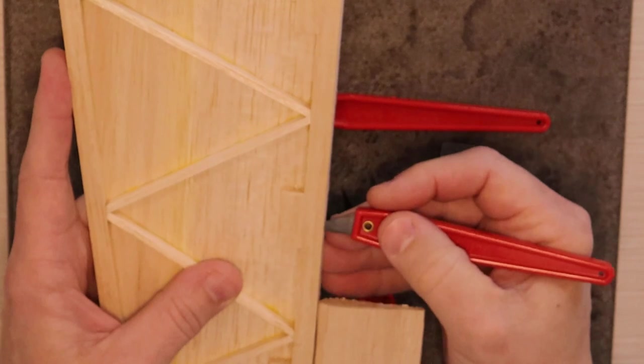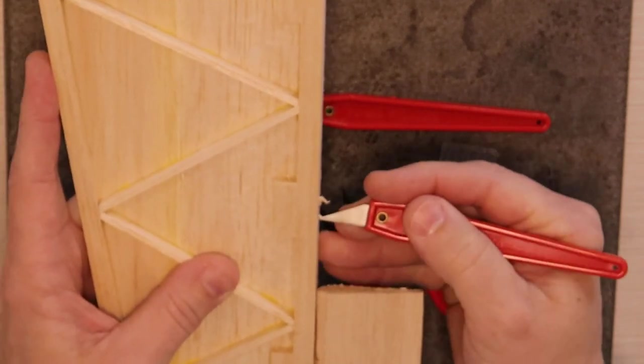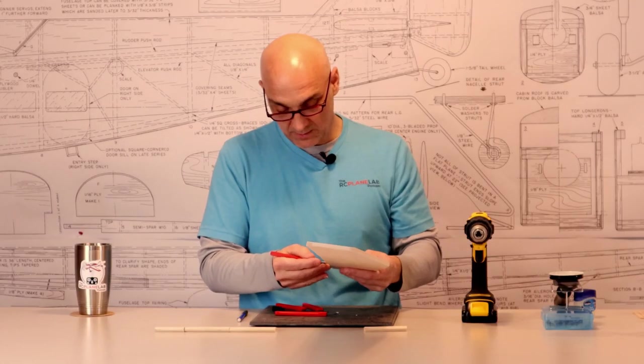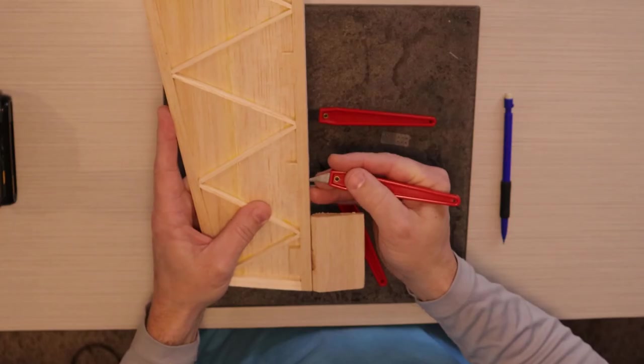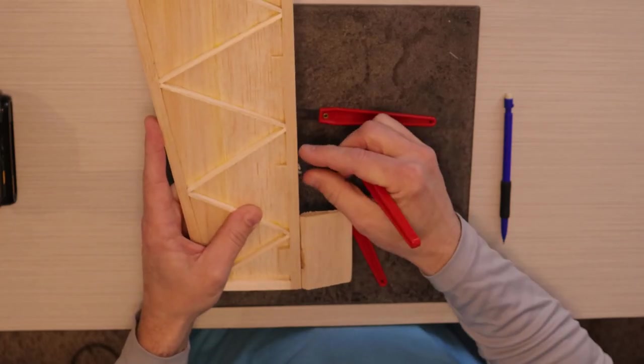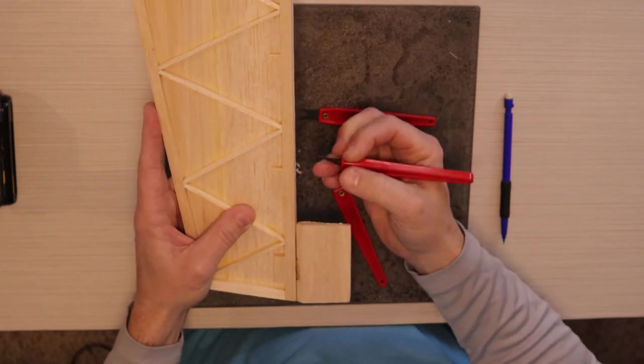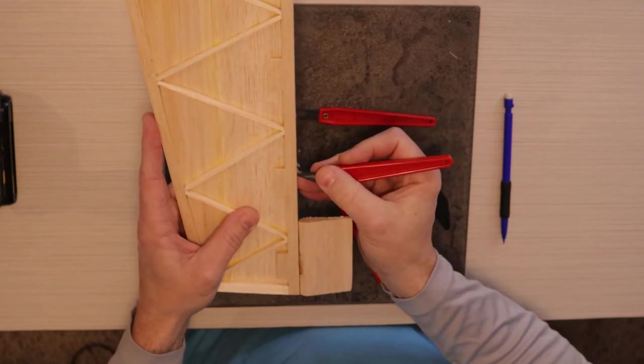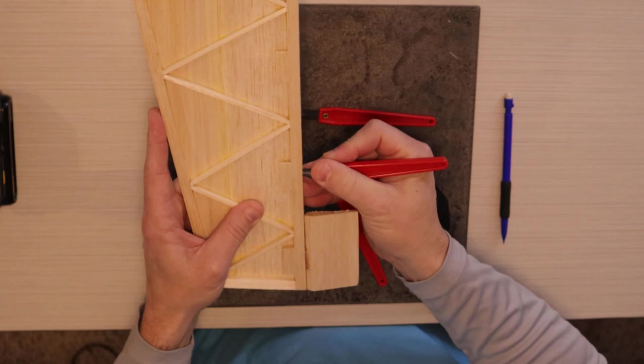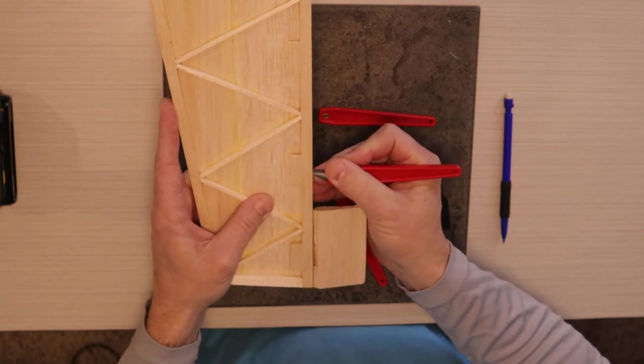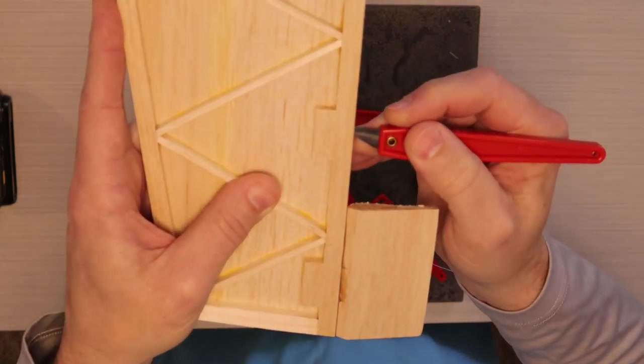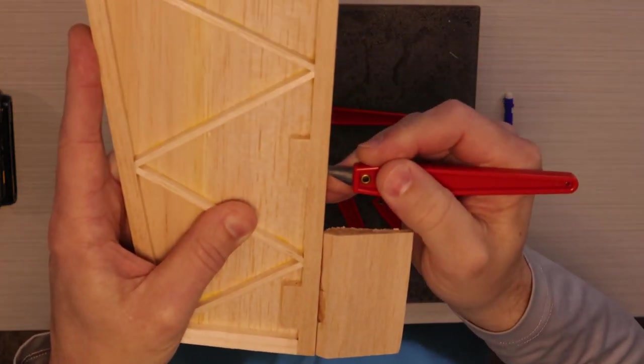And then you can see the stuff I've pulled out of there right here. And then I'll do the same thing from the other direction. Make sure I have a nice square slot. There we go. There's that piece.